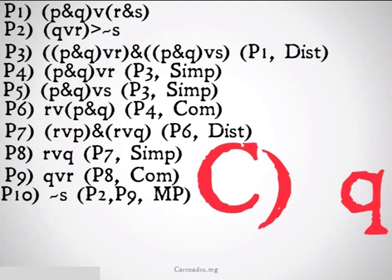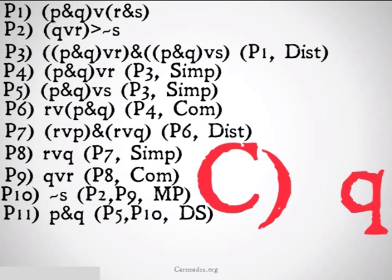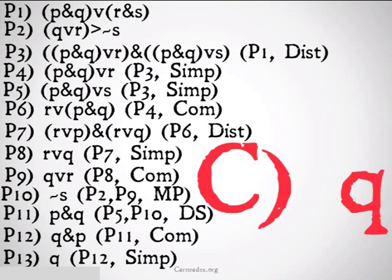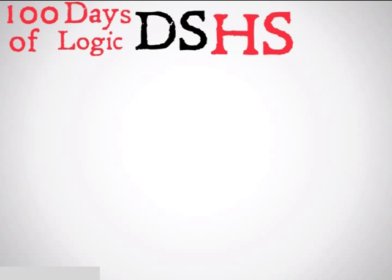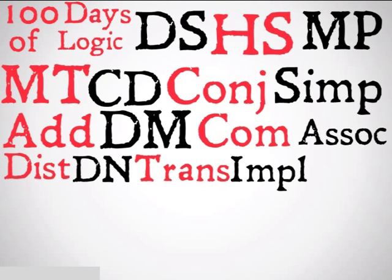Plug that into premise number two to get not s. Where can I use that not s? I'm looking for a disjunction somewhere or an implication. Look up at premise five and you'll find that very disjunction. We can conclude from five and ten p and q disjunctive syllogism. We'll switch them around with commutativity to be rigorous and finally conclude q from premise twelve simplification. Wow, a lot of work and a really tough first step to get to. A lot of times it'll be that first step that'll be really hard and everything else will fall out from that.